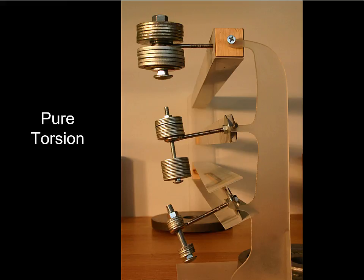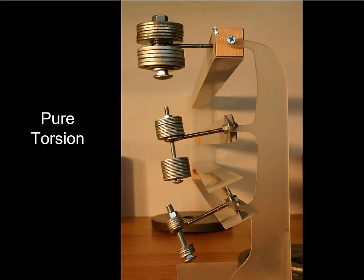In addition to those three modes of structural action — axial tension, axial compression, and bending — we have a fourth, which is called torsion. Here we have some styrene sheet, a sixteenth of an inch thick, made into a tube. Then we took the same amount of styrene and glued it into a slab, and the same amount configured into an I-beam. This demonstration shows how much better a tube is than an I-beam when it comes to torsion — I-beams work great for bending but are very poor for torsion.